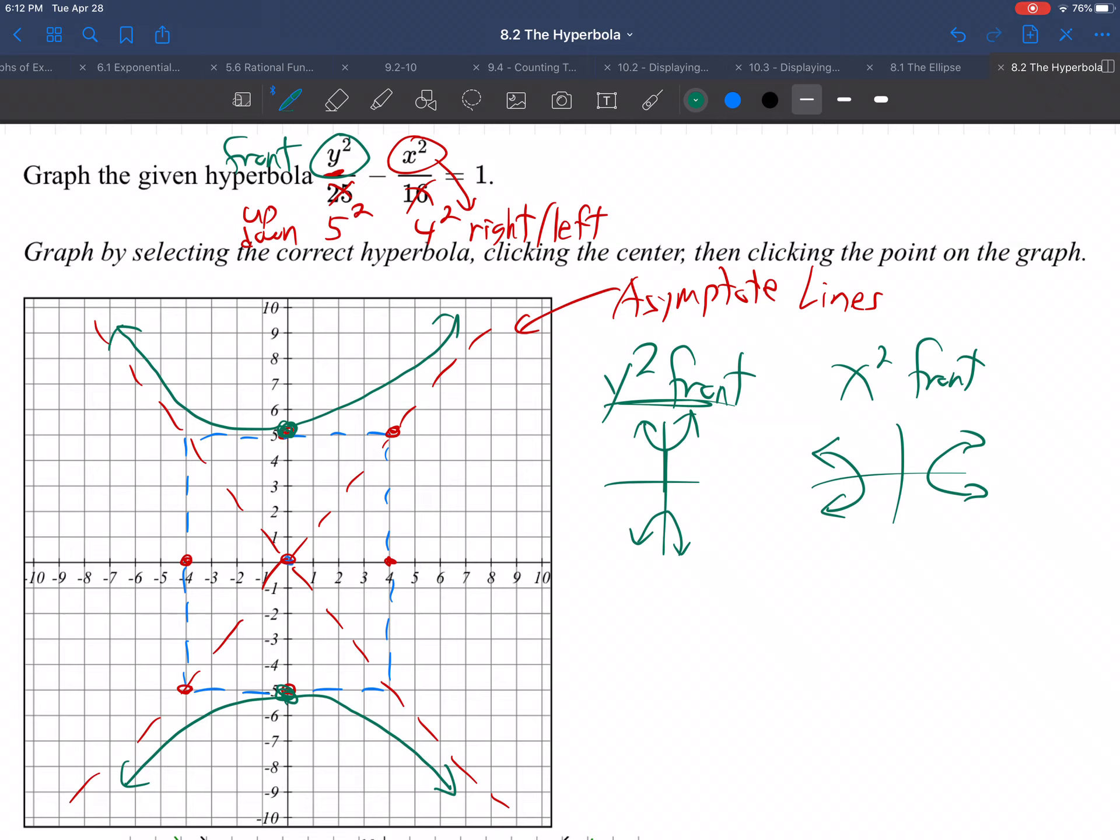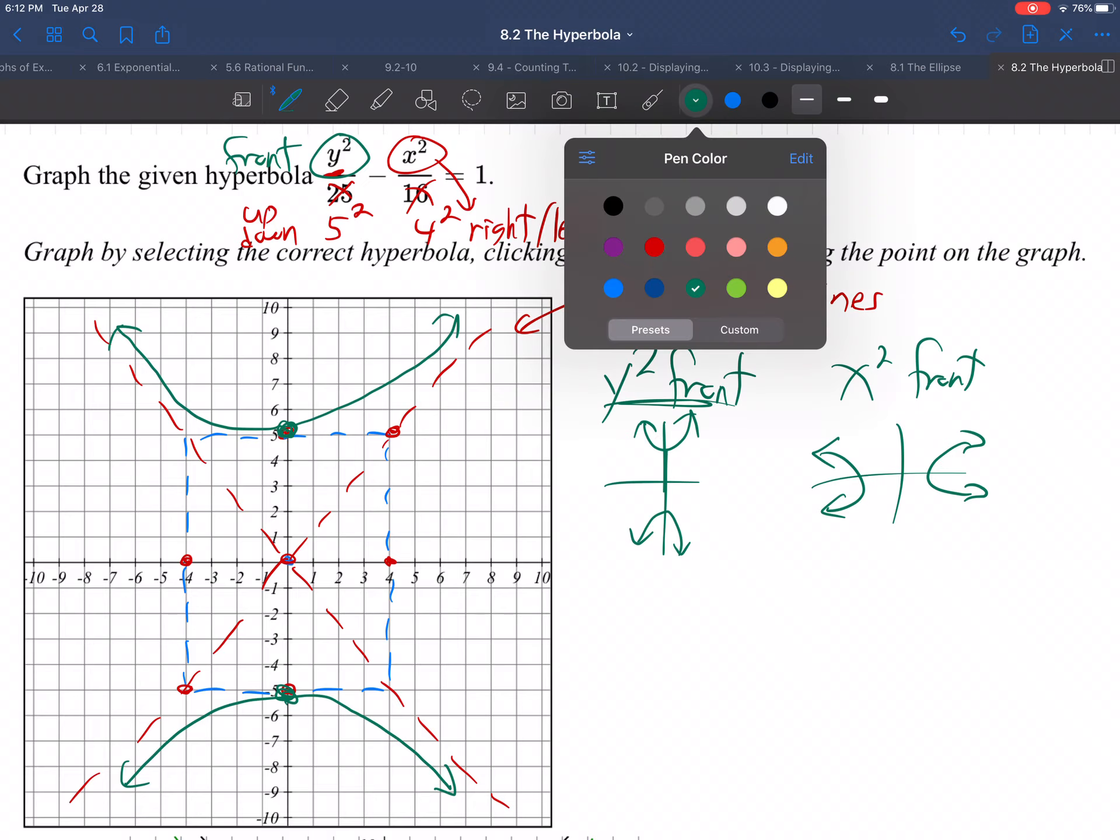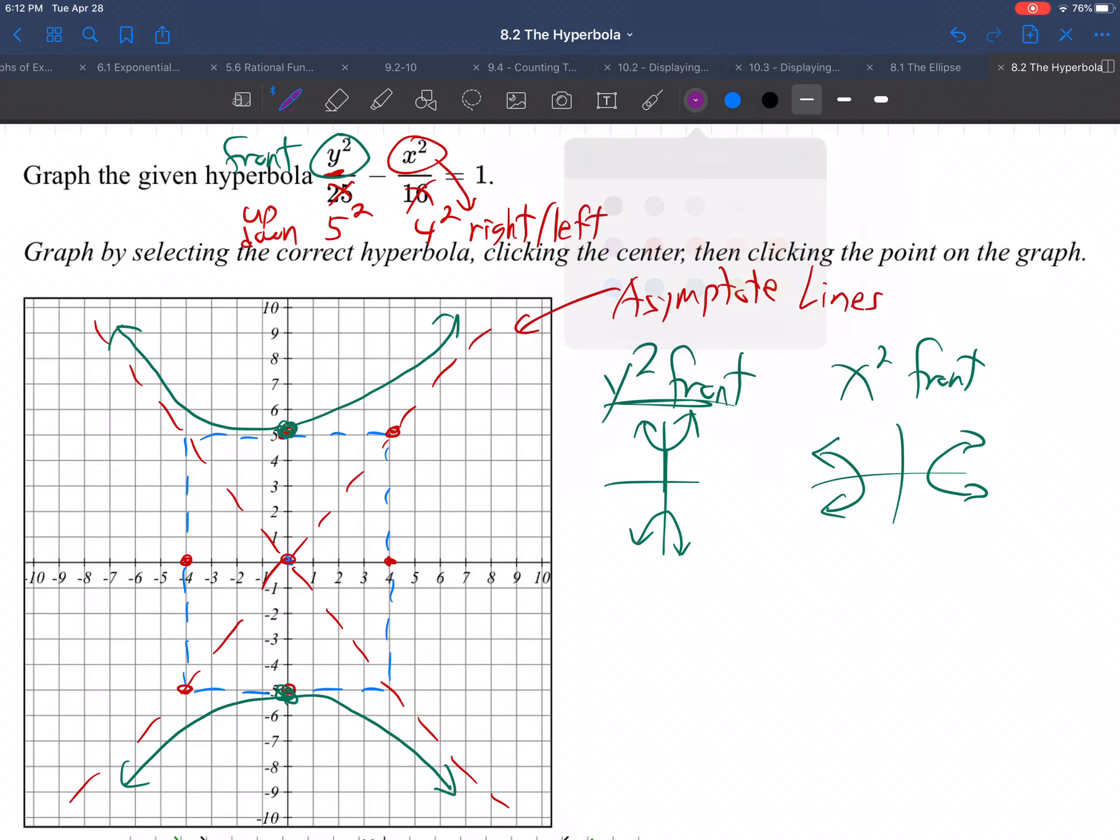Now, let me show you how you actually do that on the graphing system they've provided. Basically, you have to click on the center dot, which is going to be the origin in this case. And then the upper right corner, and I'm going to do the upper right-hand corner. And then it'll make the hyperbola graph.